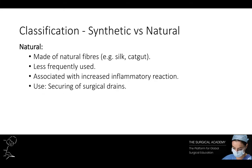As well as organising sutures according to whether or not they are absorbable, sutures can be classified according to their raw origin. Natural sutures are made from natural fibres — examples include silk or catgut. They are less frequently used as they tend to cause a bigger tissue reaction. However, silk is still commonly used, especially when securing a surgical drain.